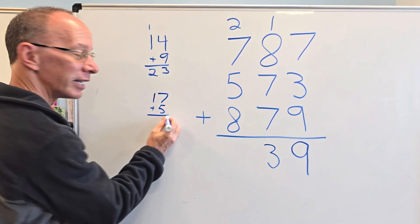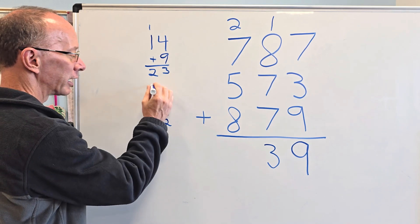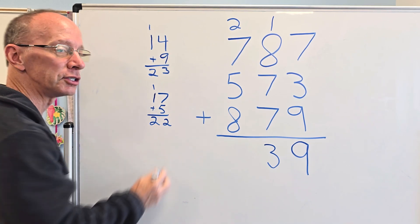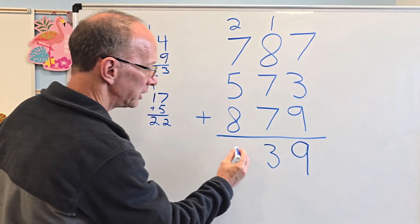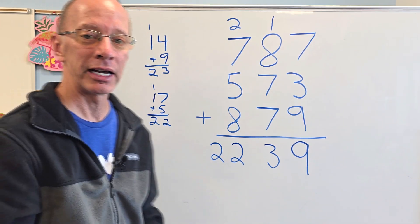And then plus five. And you might have done it a different way, and that's okay. Then seven, eight, nine, 10, 11, 12. And then carry the one, which would be 22. So I'm going to write 22 right here. And there is my answer.